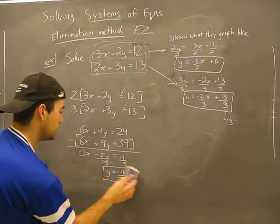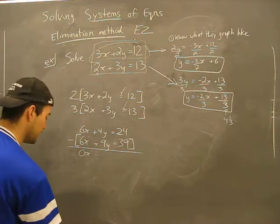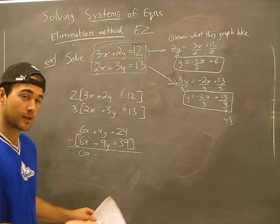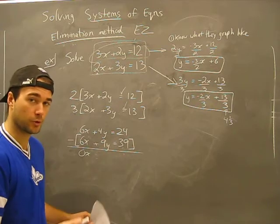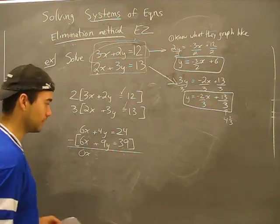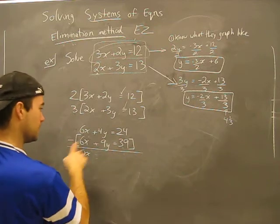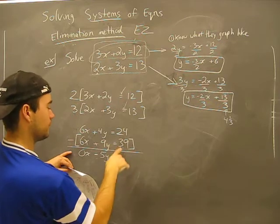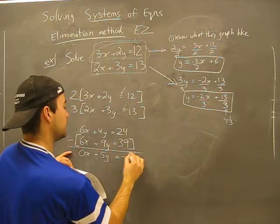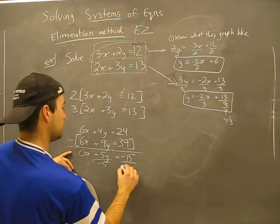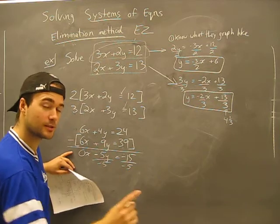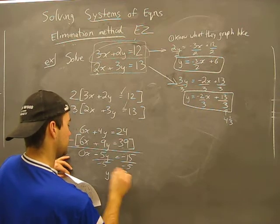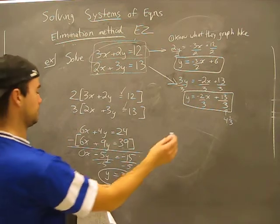I knew somebody was going to comment on my video and say I screwed up — but I'm allowed to make mistakes, I'm a human being. The key is to solve our mistakes. So: 24 minus 39 equals negative 15. That gives us negative five Y equals negative 15. That probably looks a little better. It's okay to make mistakes — just put in the time to solve it. Y equals three.